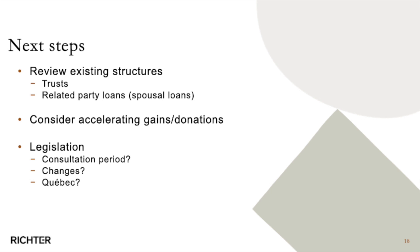As next steps, we recommend reviewing existing structures. Trusts are taxed as individuals and AMT is only applicable to individuals and trusts, so review what the trust holds that may be subject to AMT. Related-party loans — if you loan to your spouse with a small spread, the 50% limitation on the expense will further increase the effective cost. Potentially consider accelerating gains into 2023 and donations to mitigate against future AMT exposures. We'll be watching when draft legislation comes out, whether there will be changes or a consultation period, and what Quebec will do.